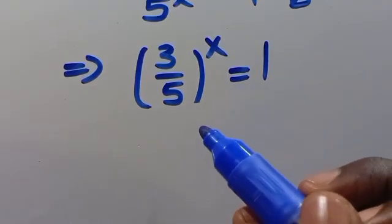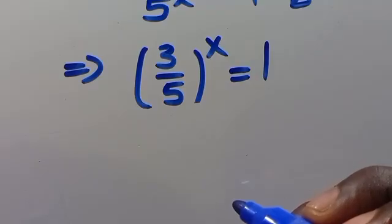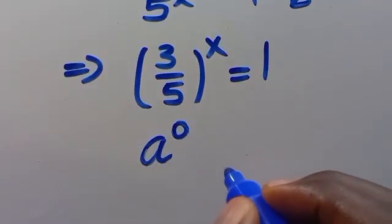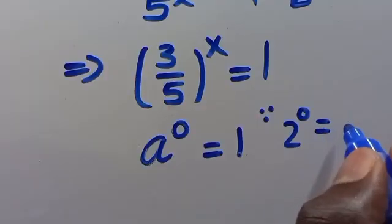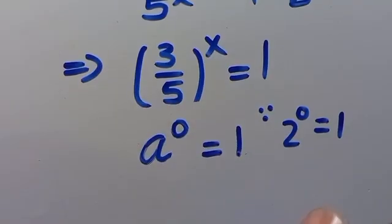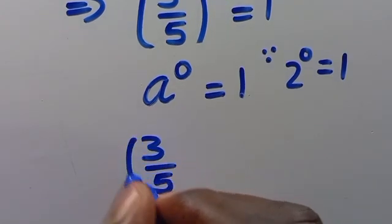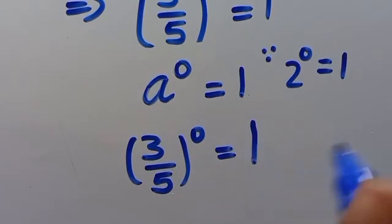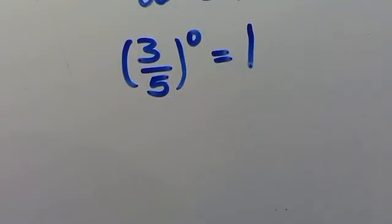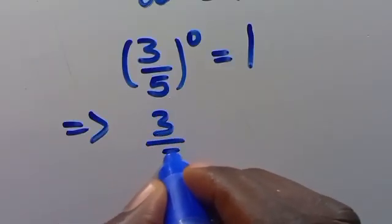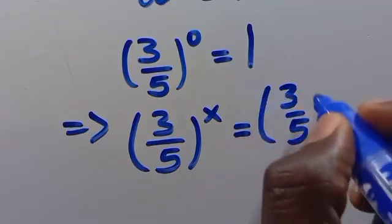So from here, we want to make sure that both sides are equivalent. To create that, we must have the same base on both sides. Let us recall from the law of indices that a to the power of 0 equals 1. So therefore, when we have (2/5) to the power of 0, it equals 1. Meaning that (2/5) to the power of 0 must give us 1. So let's replace the right-hand side: (2/5) to the power of x equals (2/5) to the power of 0.